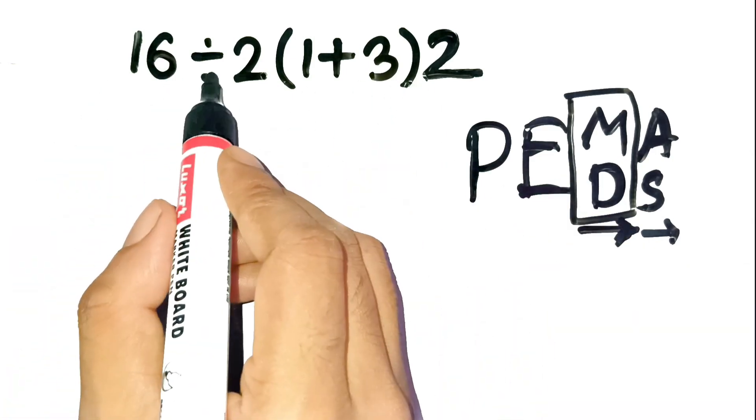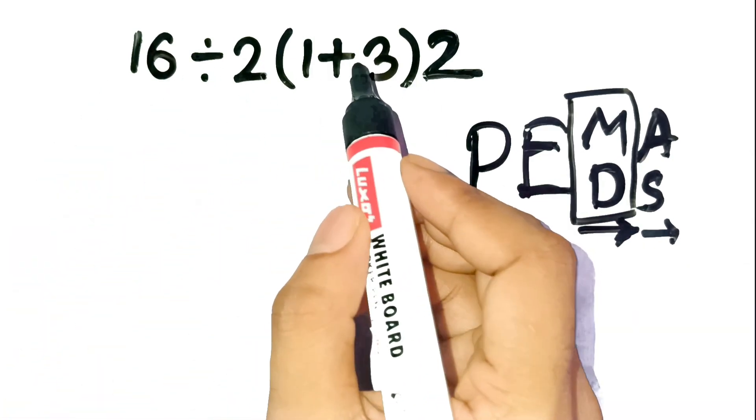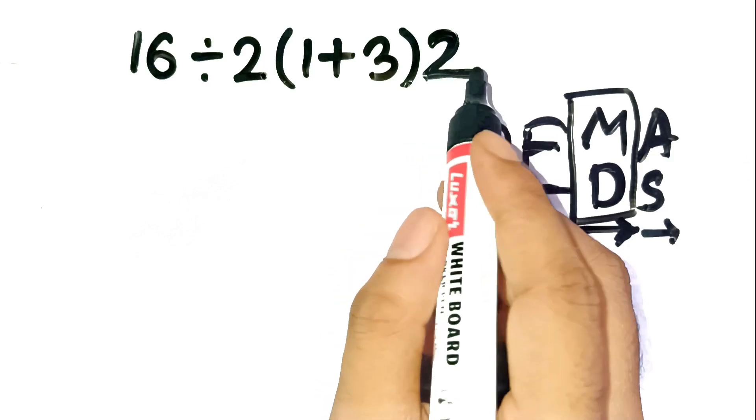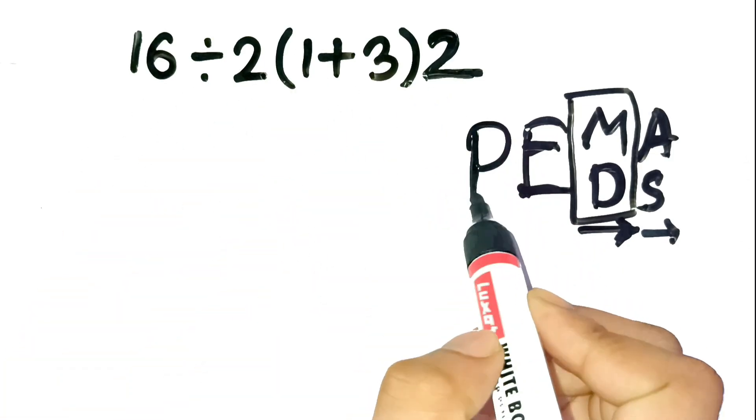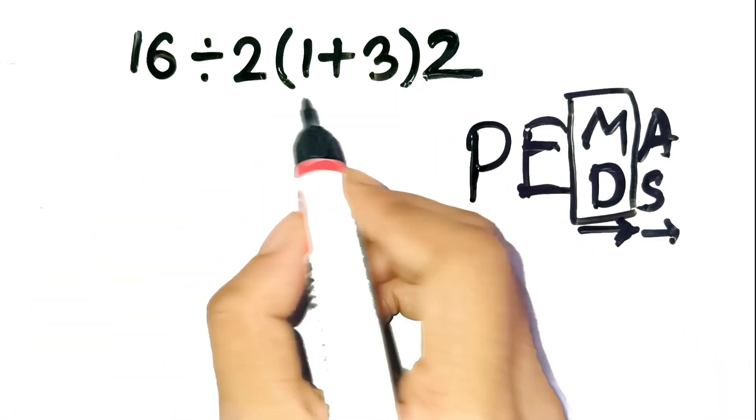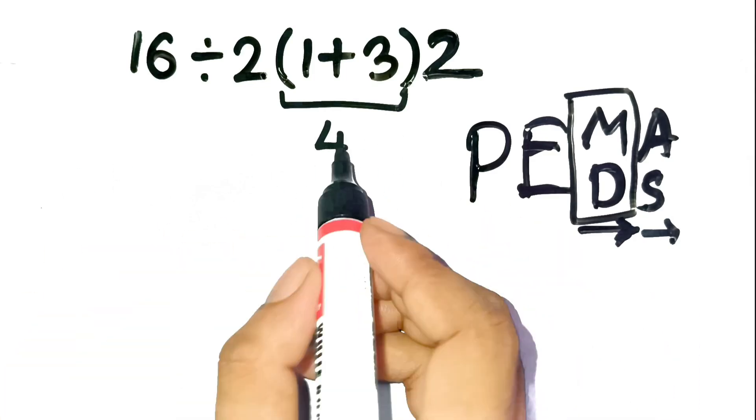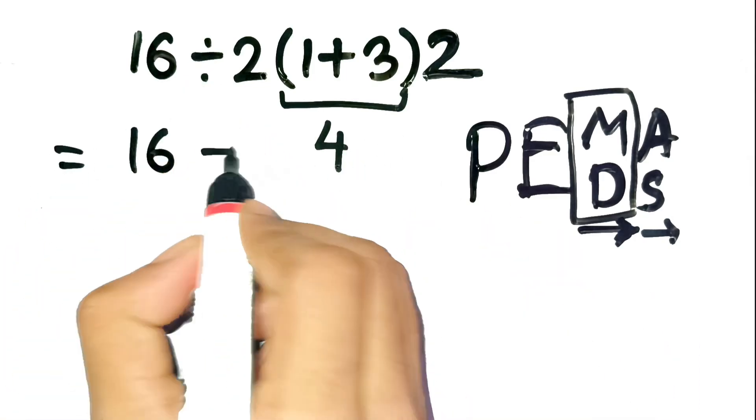We start with 16 divided by 2, open parenthesis, 1 plus 3, close parenthesis, 2. Step 1, parenthesis first. Inside that, we have 1 plus 3, which equals 4.